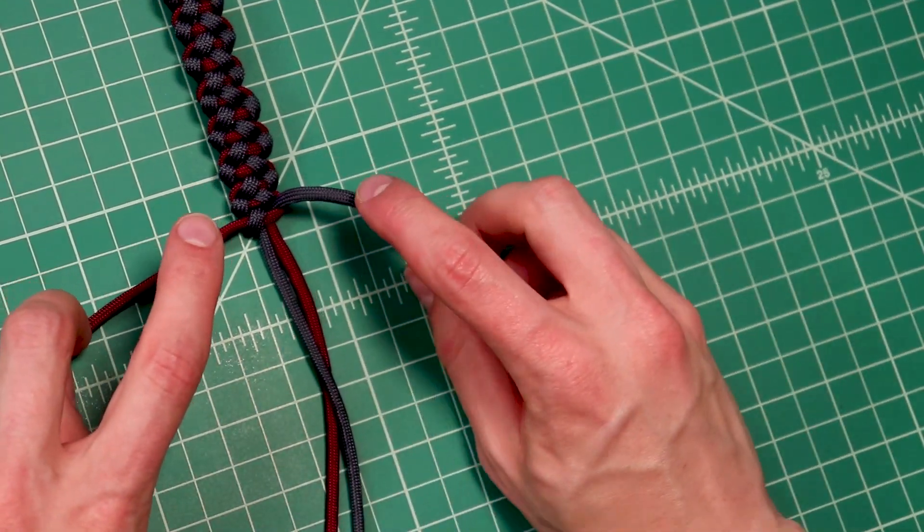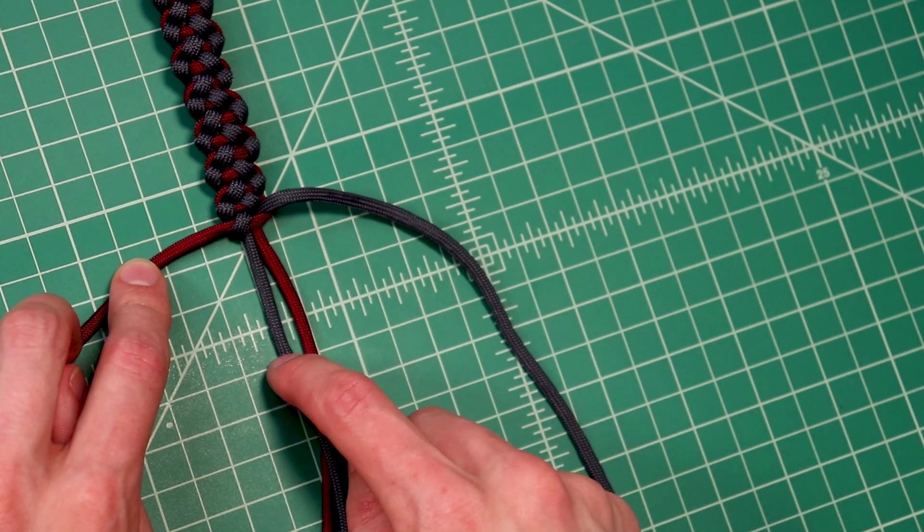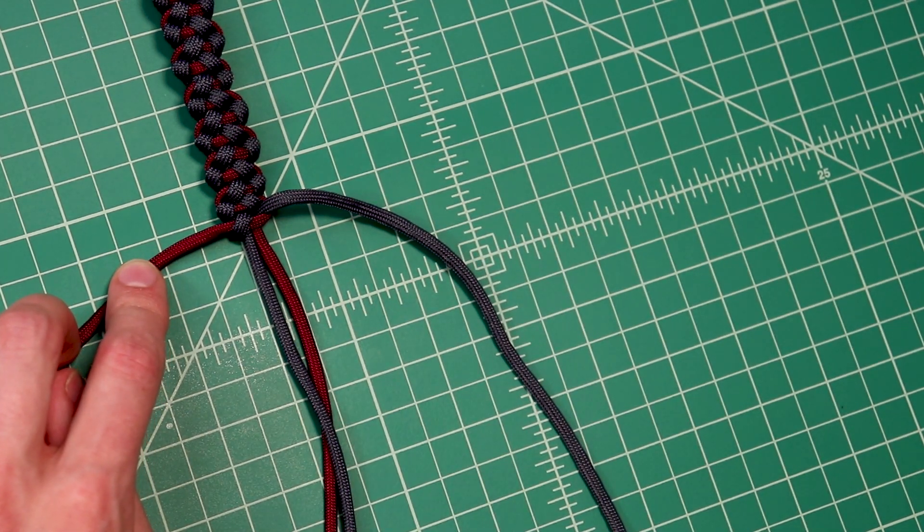But now for the end, we can go ahead and clip these two weave cords and melt those down, and then we're going to be making a diamond knot with the two core strands.